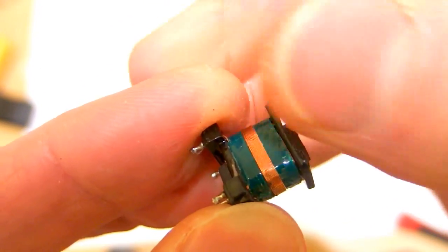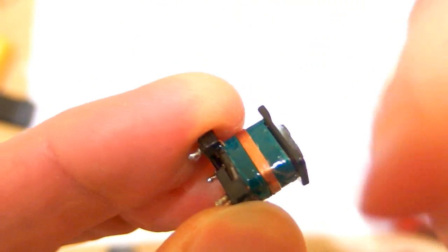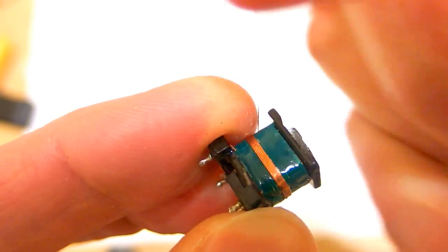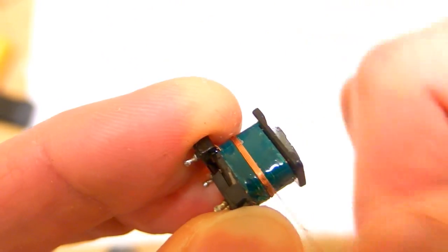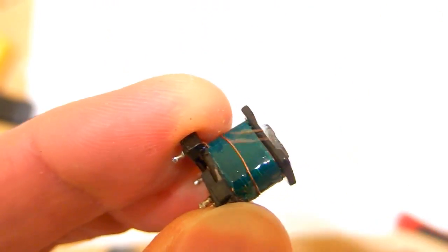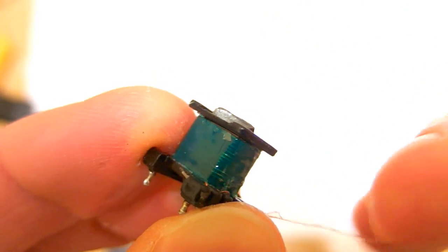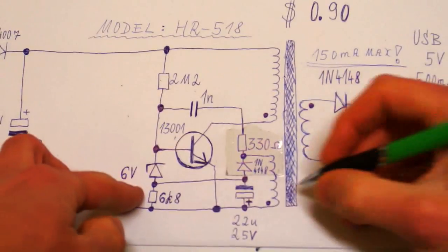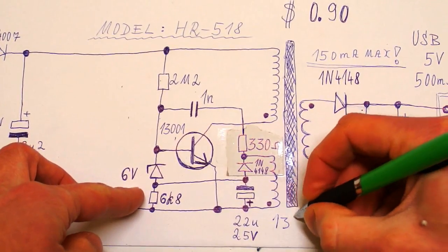One, two, three, four, five, six, seven, eight, nine, 10, 11, 12, 13. So the auxiliary winding has 13 turns.